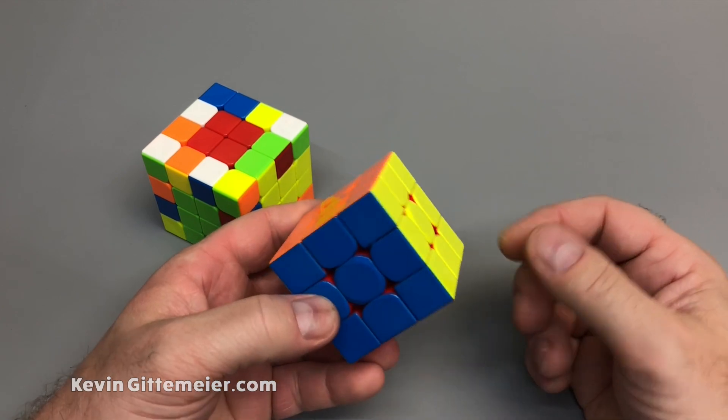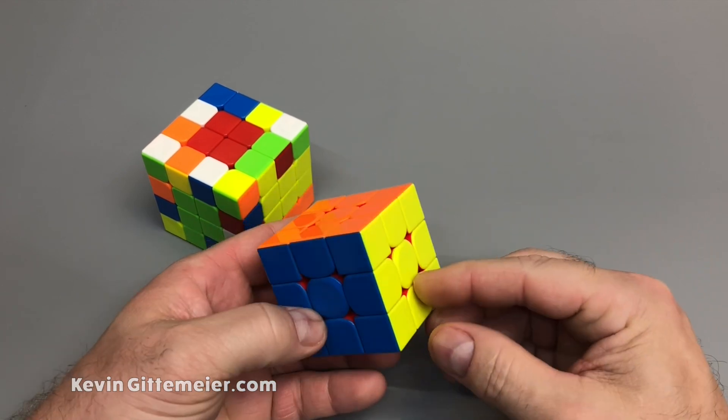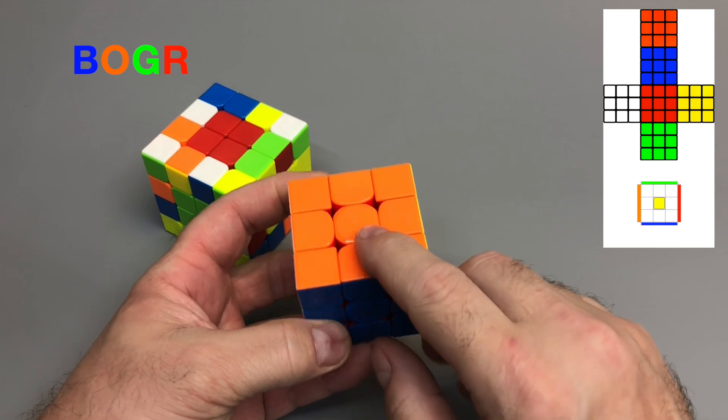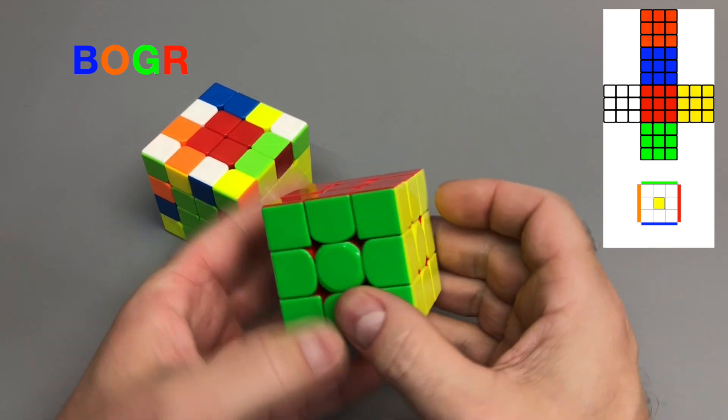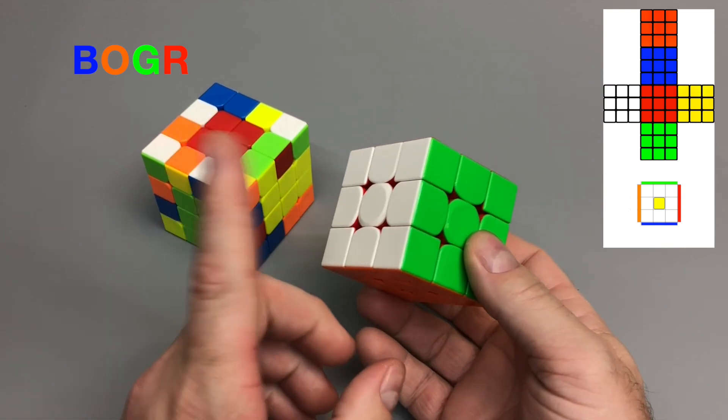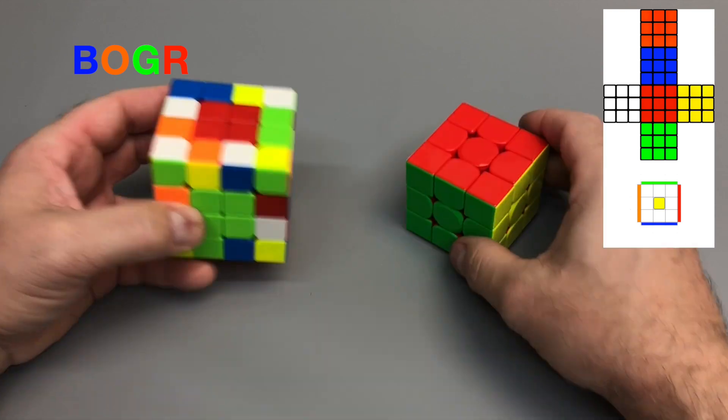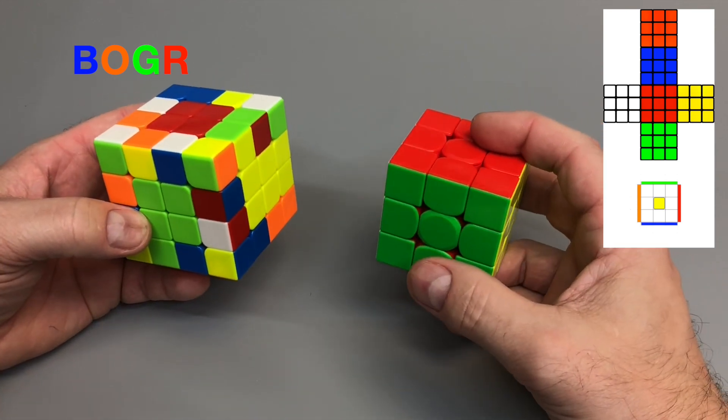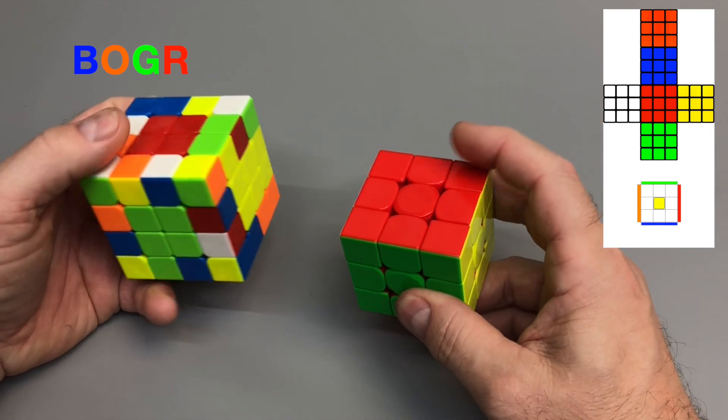Because the beginner method I teach has us solve the centers in BOGR color order—blue, orange, green, red—with yellow to the right and white to the left, we will always end with green facing us and red on top.